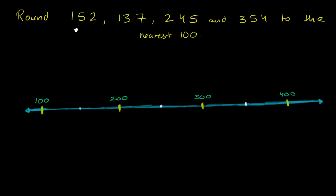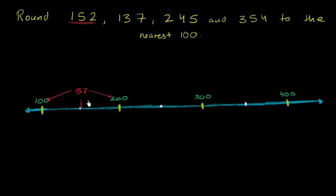And let's start with 152. Where does 152 sit? So halfway in between is 150. 152 is going to be right to the right of that — right over here. So what are our two options? We might round up to 200, which is the multiple of 100 above 152, or round down to 100, which is the multiple of 100 below 152.